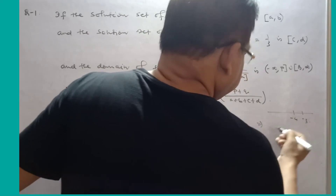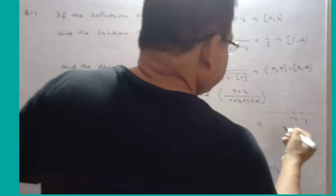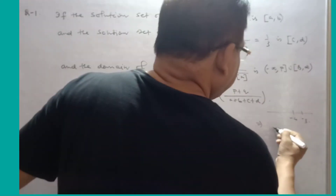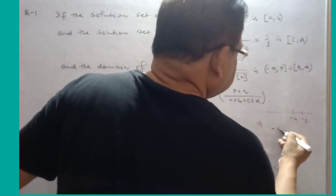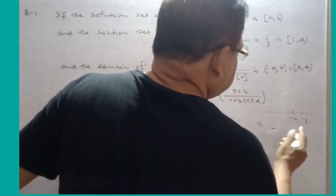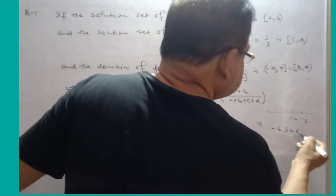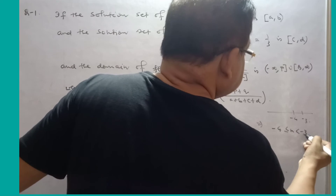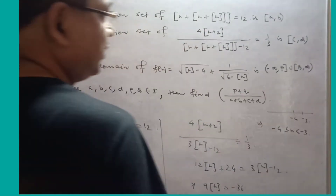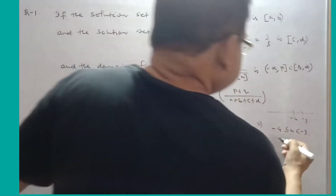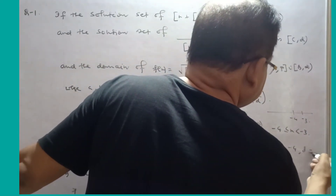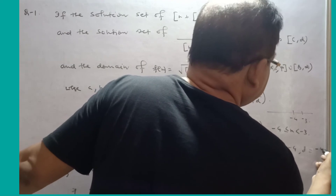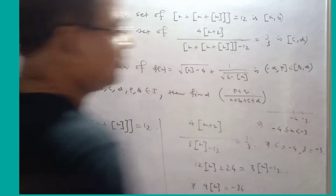Greatest integer of X equals −4 means X is in the interval [−4, −3). So C = −4 and D = −3.